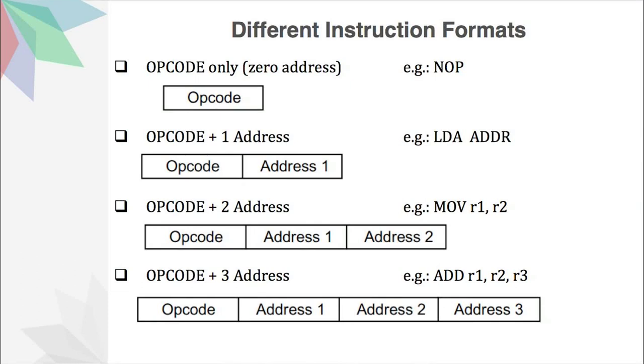We can have another type of instruction format — the third type — where we will have an opcode and along with it two addresses. Here in the slide we can see we have opcode, then address 1, then address 2. An example of this type would be MOV R1, R2, where R1 and R2 are two registers. Using MOV, we want to move the contents of register R2 into R1. So this is the third type of instruction where we specify two addresses along with the opcode.